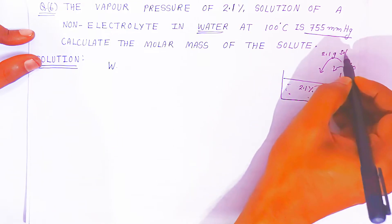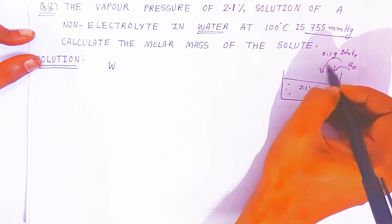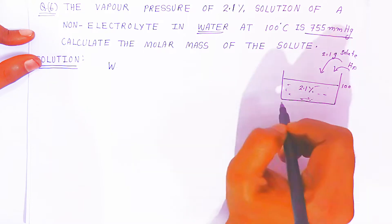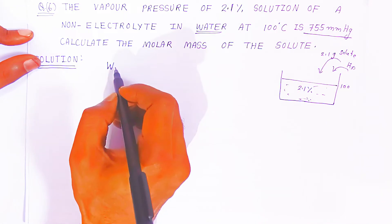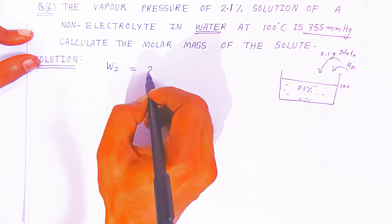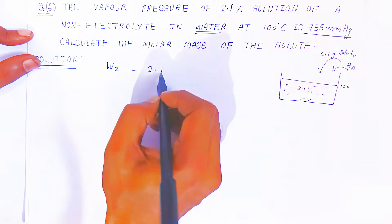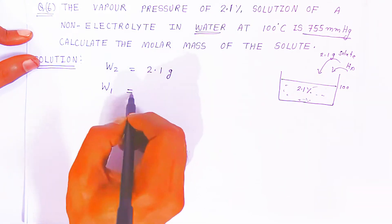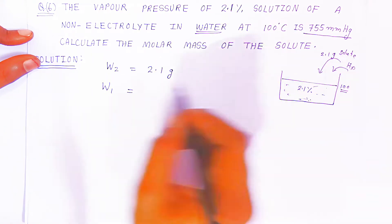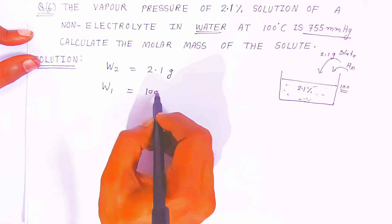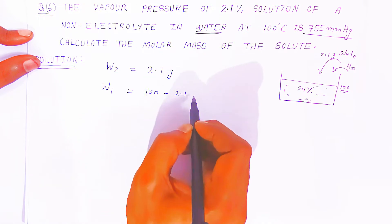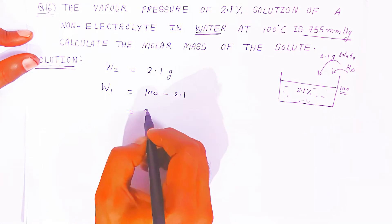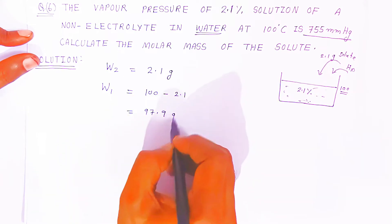So the weight of solute is given. We represent it in grams: W2 = 2.1 grams. The weight of water — since the total is 100 grams — W1 = 100 minus 2.1 = 97.9 grams.